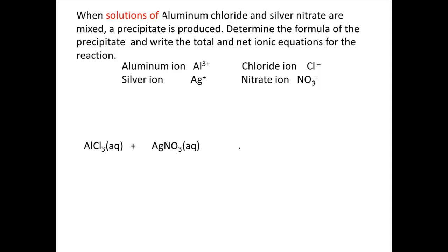Next, we need to figure out the formulas of the products. Remember that in a double replacement reaction, the ions switch partners. So the aluminum goes with the nitrate, and the silver goes with the chloride. This means one of the products is Al(NO3)3, and the other is AgCl.